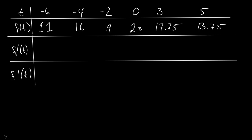Here we want to learn how to get the second derivative from a table of values. Before we do that, let's remind ourselves how to get the first derivative from a table of values. That's all about finding the slope. Let's try a middle point first, because that's a little bit more complicated.